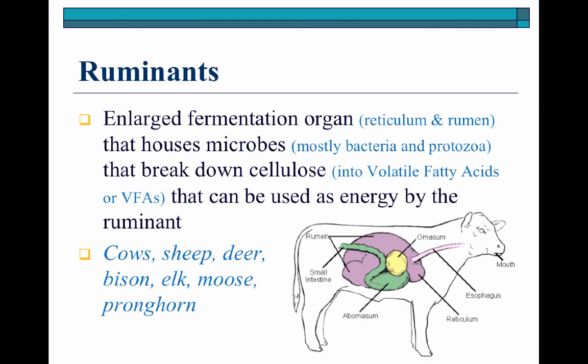Our ruminant species have an enlarged fermentation organ — those are going to be the reticulum and the rumen. The rumen is where you are going to see the greatest population of microbes, and those microbes are broken down into bacteria, protozoa, and fungi. It's the bacteria and the protozoa that do a lot of the fermentation process. Our ruminants have the ability to break down cellulose into volatile fatty acids, or VFAs — specifically acetate, propionate, and butyrate — and those volatile fatty acids can be further used later in the system for energy by the animal.